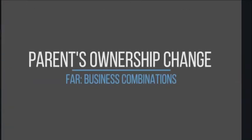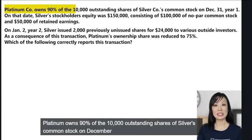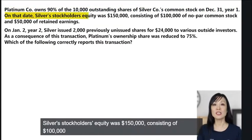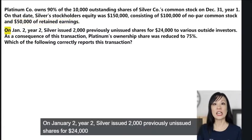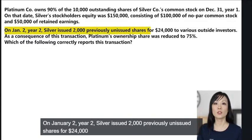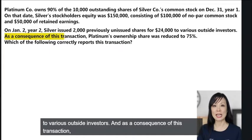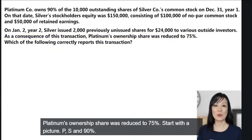Platinum owns 90% of the 10,000 outstanding shares of Silver's common stock. On December 31st Year 1, Silver's stockholders' equity was $150,000, consisting of $100,000 no-par common stock and $50,000 of retained earnings. On January 2nd Year 2, Silver issued 2,000 previously unissued shares for $24,000 to various outside investors, reducing Platinum's ownership share to 75%.